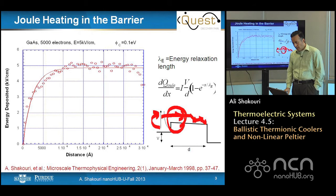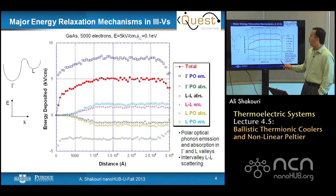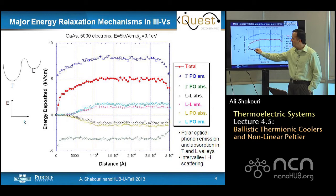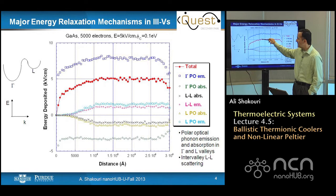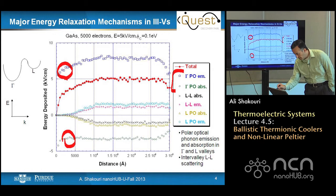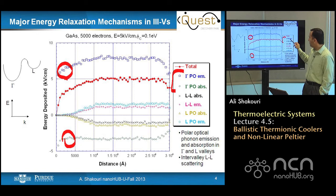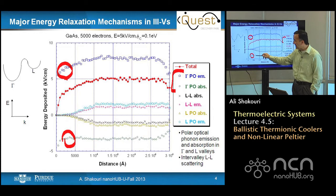Once you do Monte Carlo, you can actually learn quite a bit about electrons. You can see where the energy of the electrons is deposited. The major energy relaxation mechanism in a III-V, in particular gallium arsenide — the red dots are the data from the previous graph — and here are the major contributors to this energy relaxation. The most significant components are the polar optical phonon emission and absorption in the gamma valley. Gallium arsenide has electrons in the gamma valley, and at high electric fields they could also go to the L valley. Polar optical phonon emission and absorption take energy from electrons and give some energy back; the net balance is energy loss, given by the red curve.